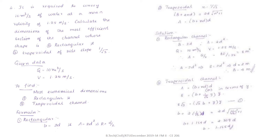The condition for the trapezoidal channel is b + 2nd = 2d × √(n² + 1), or equivalently, half of the top width must equal the length of the side slope: (b + 2nd)/2 = d × √(n² + 1). Area = (b + nd) × d, and n = 1/√3 as given in this problem.